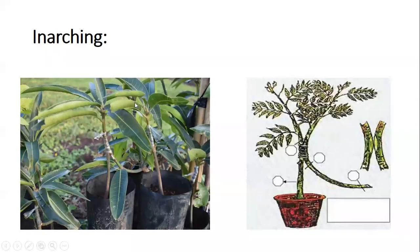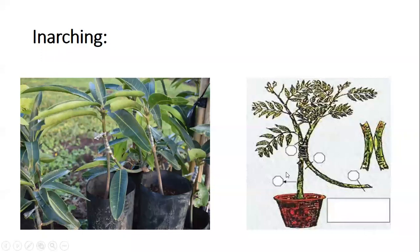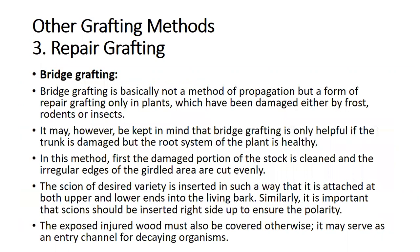In the inarching method, both rootstock and scion portions have roots. A thin slice cut is given on the rootstock portion and the scion portion. Both cambium layers are exposed and brought together to unite, then tied with a polythene strip. This method is mostly done for support.